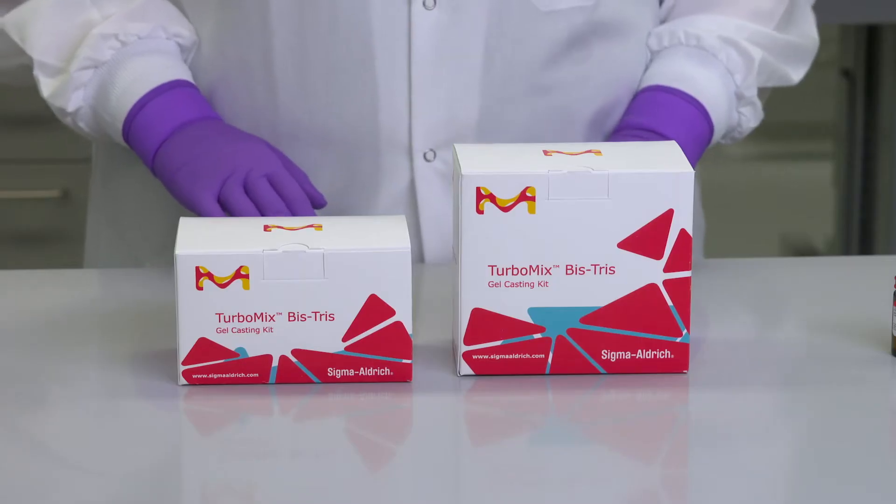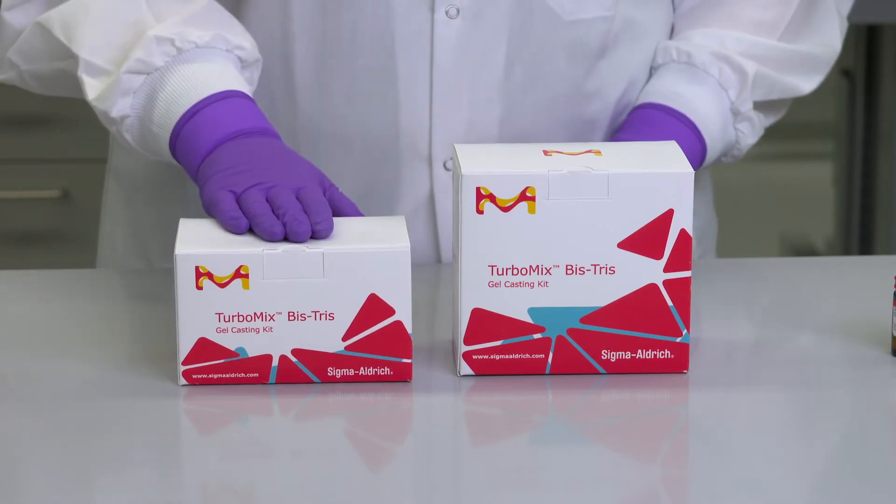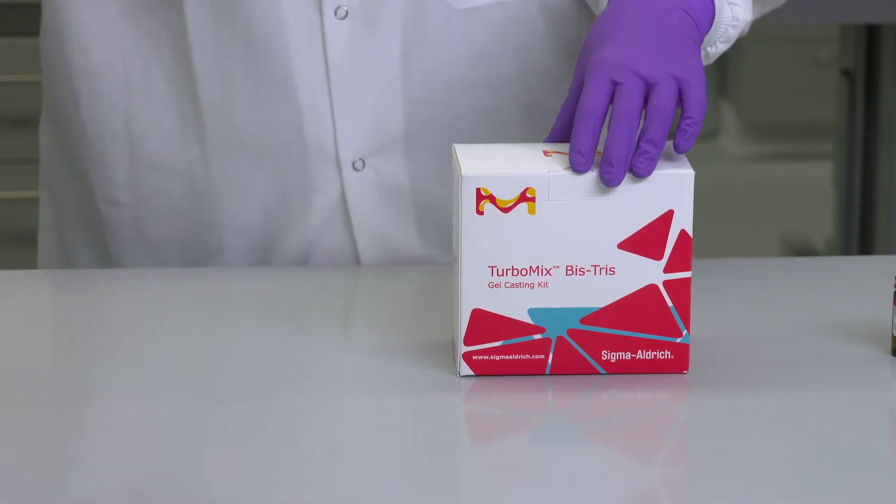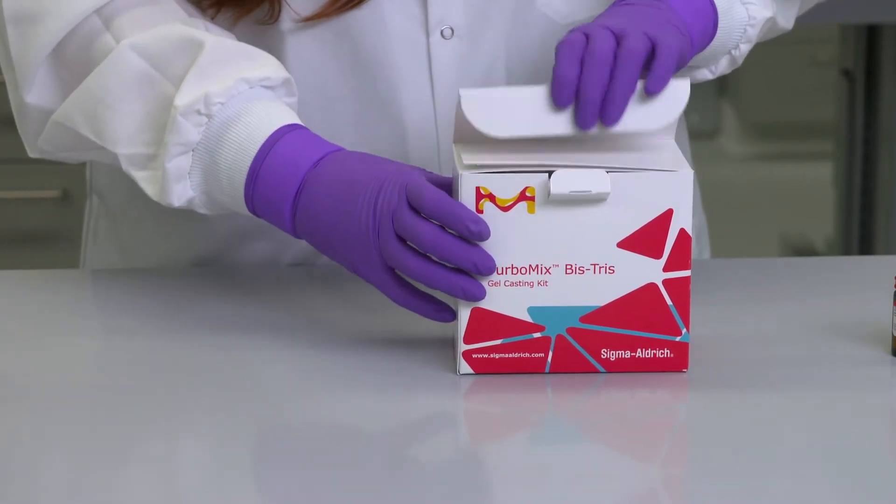The Turbomix Bistris Gel Casting Kit comes in two different sizes, enough to make 10 gels or 60 gels. This kit has been optimized to simplify gel preparation steps and minimize reagent waste.